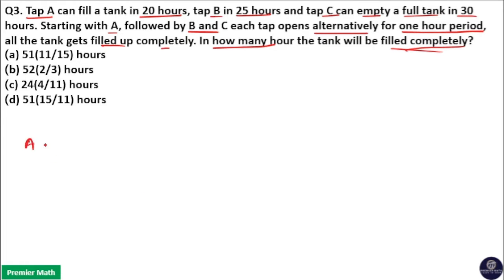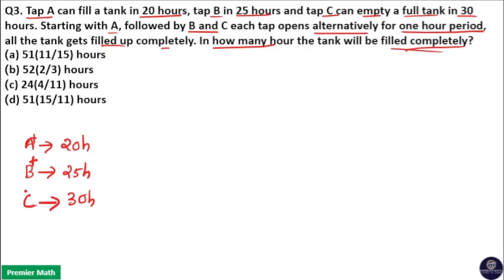Tap A can fill a tank in 20 hours, Tap B can fill a tank in 25 hours, and Tap C can empty a tank in 30 hours. A and B fill the tank so they are positive, and C empties the tank so it is negative. The work rate of A, B, and C are based on the same tank capacity, so the work rate is the same for all three.